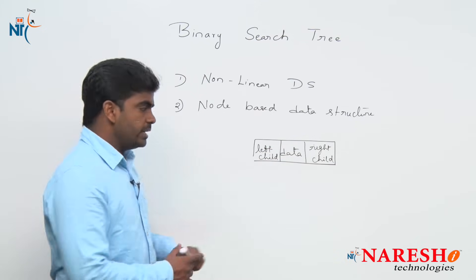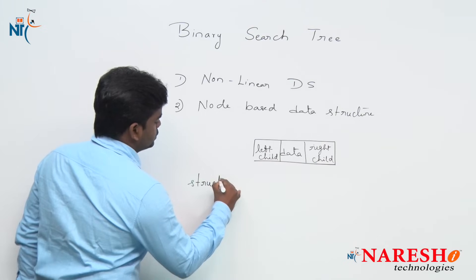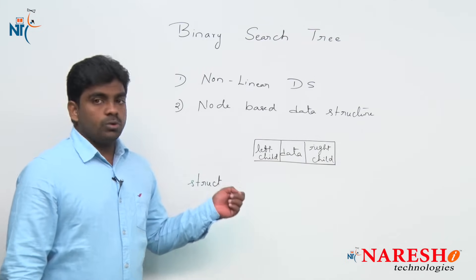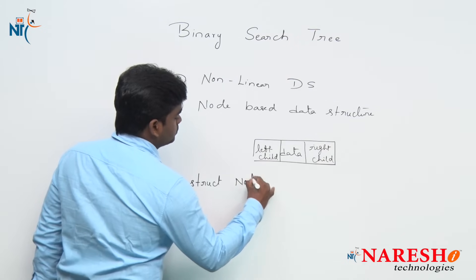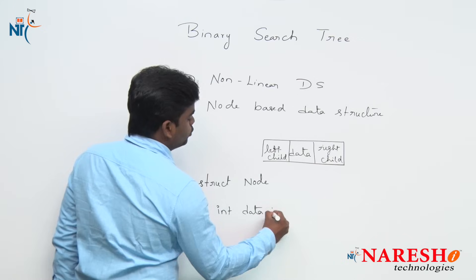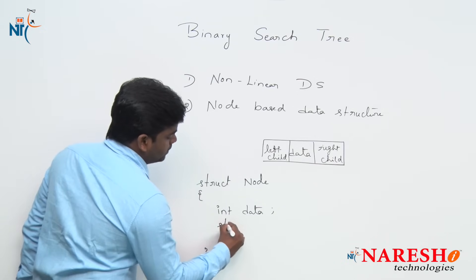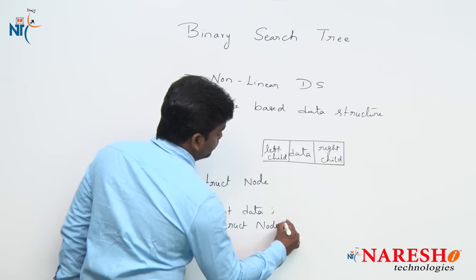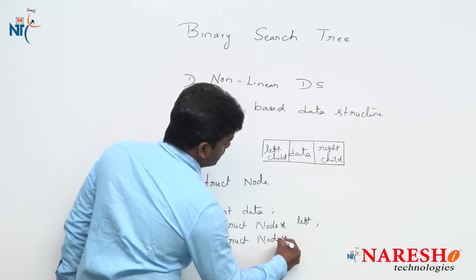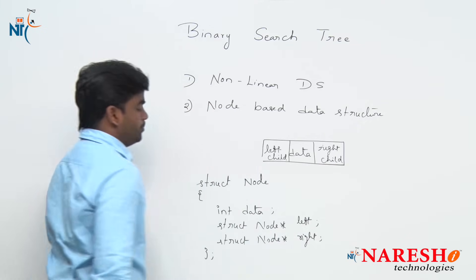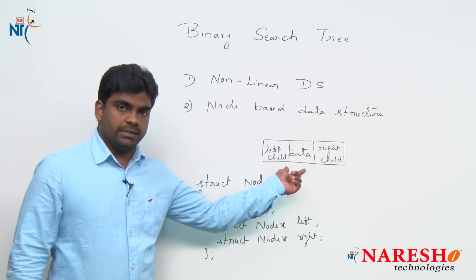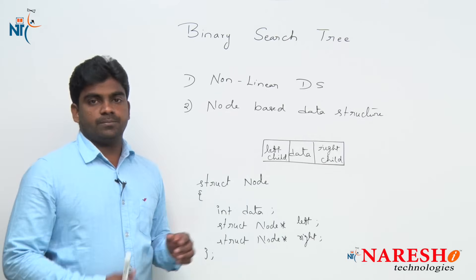This is a non-linear, node-based data structure. We know how to create a node — very simple, with the help of the struct data type, a user-defined data type. You can give the name BST binary search tree node, or simply 'node'. As usual it has three fields: one data field, and two more fields — one is a struct node pointer type for the left child, and the second one is also a struct node pointer type for the right child.